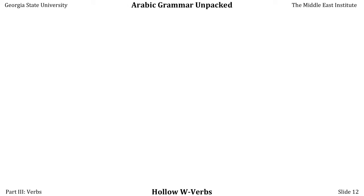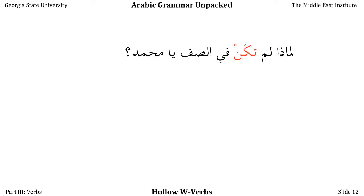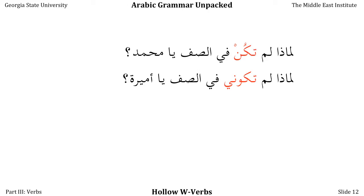Let's take a few examples of this rule in action. We can say: لماذا لم تكن في صف يا محمد؟ — 'Why weren't you in class, Muhammad?' Here we have the MUDARIT MAJZUM after LEM, a verb whose middle letter is a vowel, and no long vowel suffix. So that long vowel becomes the corresponding short vowel — WAW becomes DHAMMA — and we say TAKUN rather than TAKUN. But if we're talking to Amira, who is a woman, she gets the long I suffix, so we say: لماذا لم تكوني في صف يا أميرة؟ We get to keep our long vowel because we have a long vowel suffix.